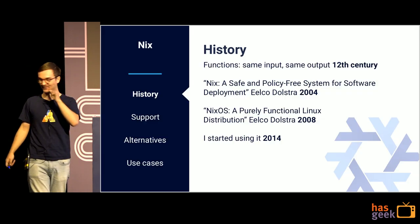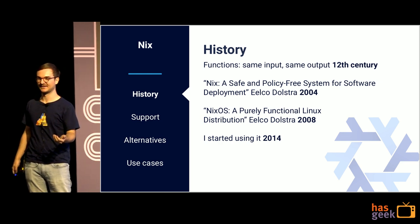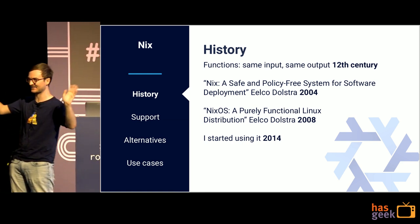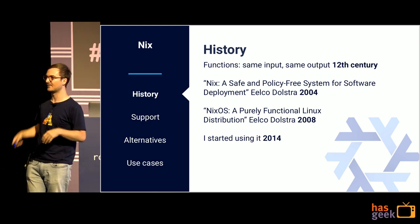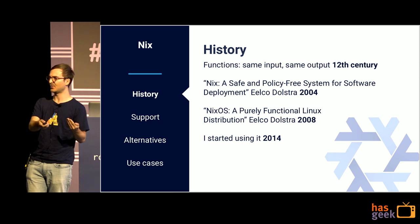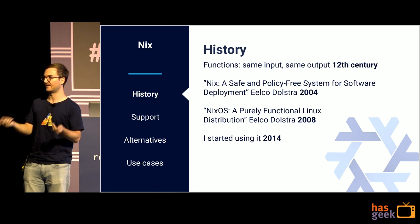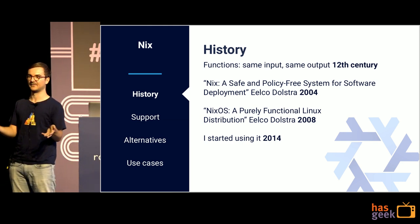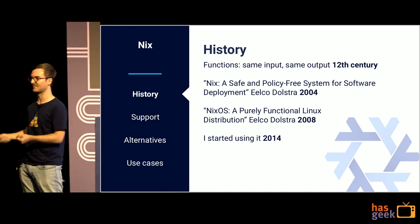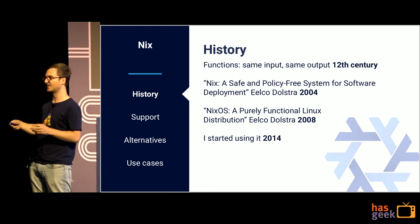A long time ago — back in the 12th, 13th, or 14th century — there was the idea of a function. One of the properties of functions is that if you give a function the same input, you'll always get the same output. If I've got a function that is plus-one and I call it with 10, I'll always get 11. There's no day in the year where I call that function with 10 and get back 13. Functions have the property that same input always gives the same output.